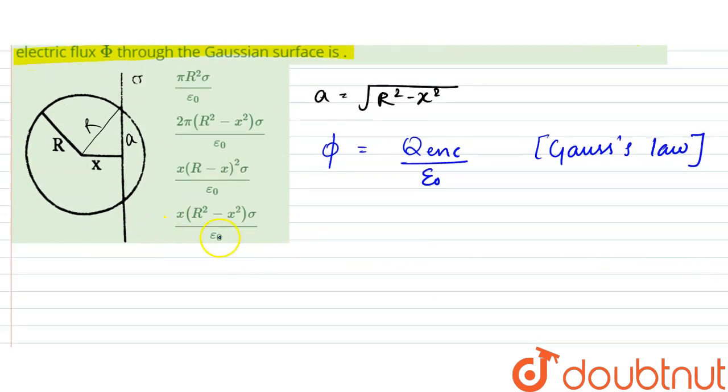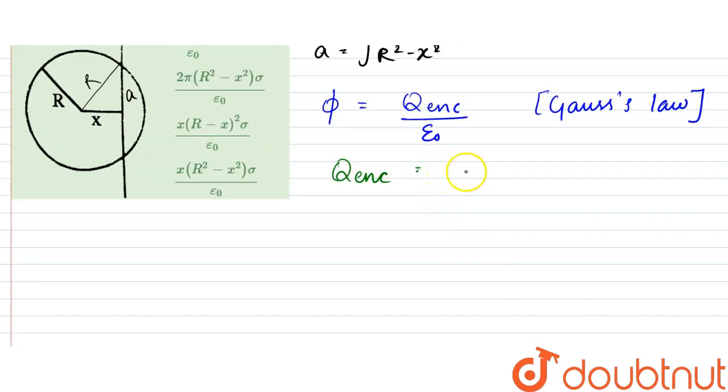So what we can see from here is that the Q enclosed is equal to the area, that is pi a squared times sigma. So that would be equal to pi times r squared minus x squared times sigma. Therefore, phi would be equal to pi times r squared minus x squared times sigma divided by epsilon zero.